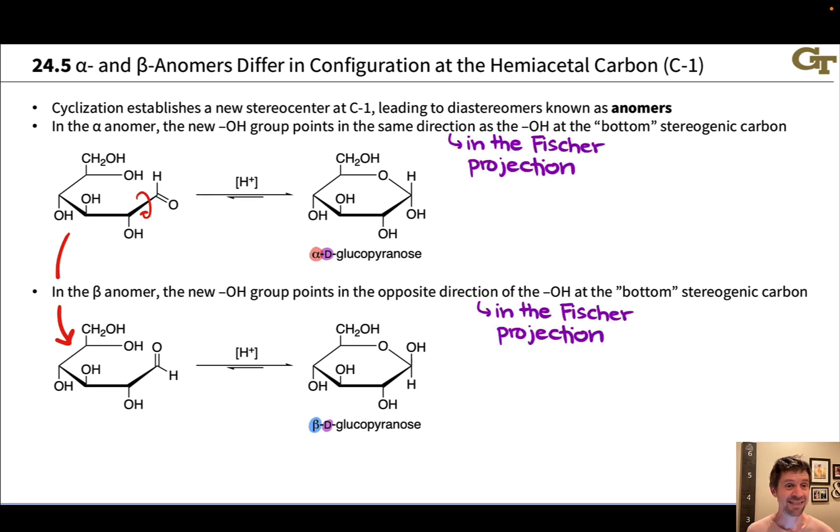How do we know whether a given anomer is alpha or beta? Well, here's the basic idea. In the alpha anomer, the new OH group, the newly created OH group linked to the anomeric carbon, linked to carbon one, points in the same direction in the Fischer projection as the bottom most OH group in the Fischer projection, the bottom most stereogenic carbon's OH group. The beta anomer has the opposite configuration of the alpha anomer at the anomeric carbon. And in this anomer, the newly created hydroxyl group in the Fischer projection at carbon one points in the opposite direction of the OH group at the bottom most stereogenic carbon in the Fischer projection.